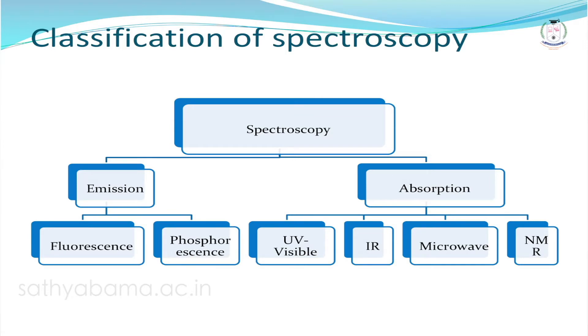Spectroscopic techniques are classified based on the measurement of radiation. Spectroscopy is broadly classified into two types: emission spectroscopy, where the emitted light is measured, and absorption spectroscopy, where the light absorbed by the sample is measured. Both emission and absorption spectroscopy can occur in atoms and molecules depending on the wavelength used.